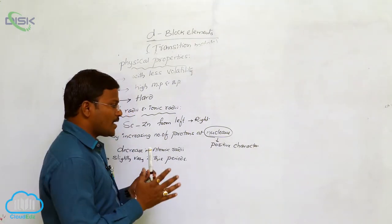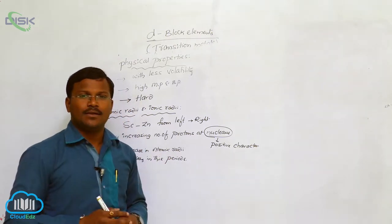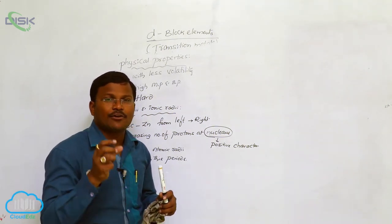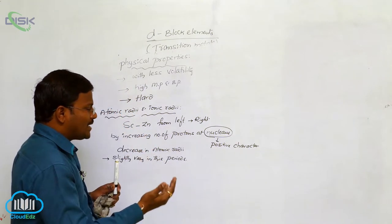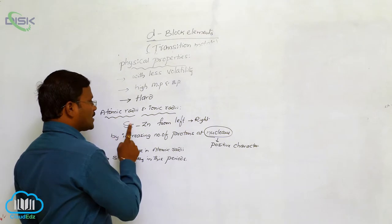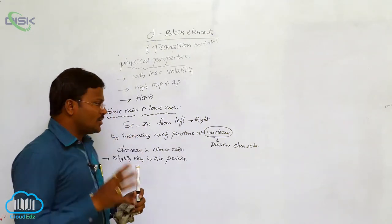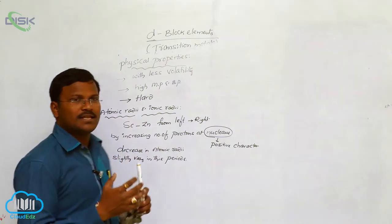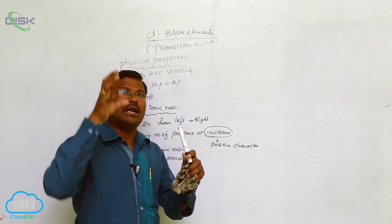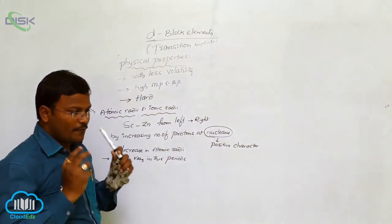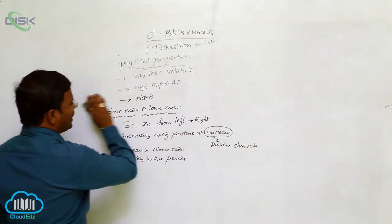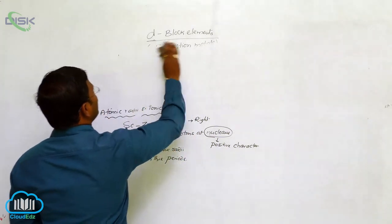Regarding ionic radii: since d-block elements are metals with more electropositive character, we can eliminate electrons from the valency orbit using ionization enthalpy. When electrons are removed, neutral atoms are converted into positive ions. The formation of positive ions leads to greater nuclear attraction onto the valency orbit, which causes a further decrease in ionic radii.